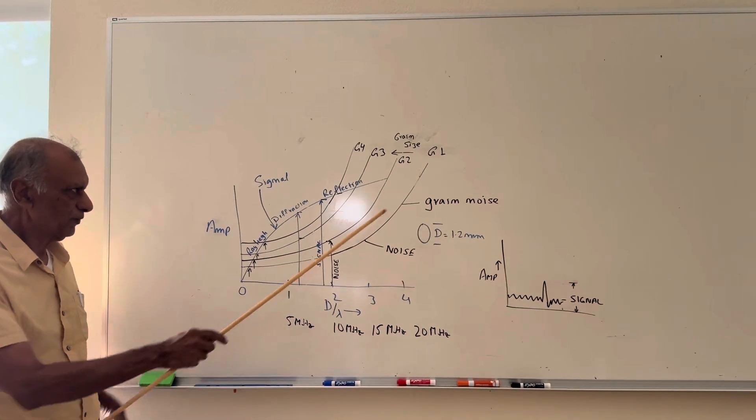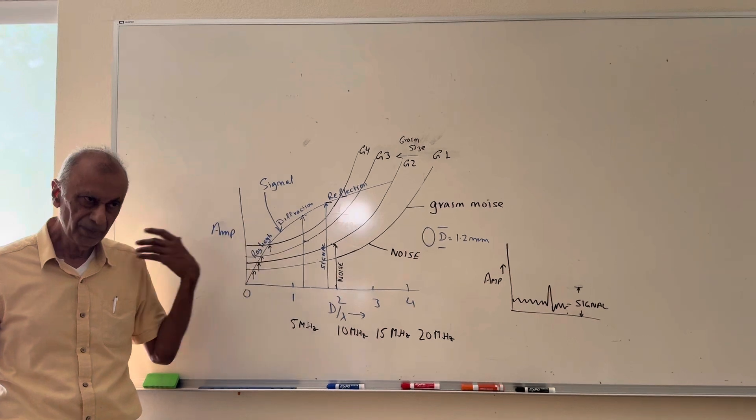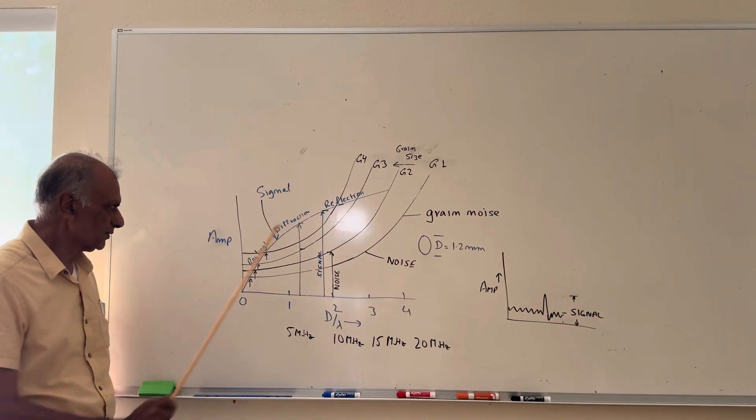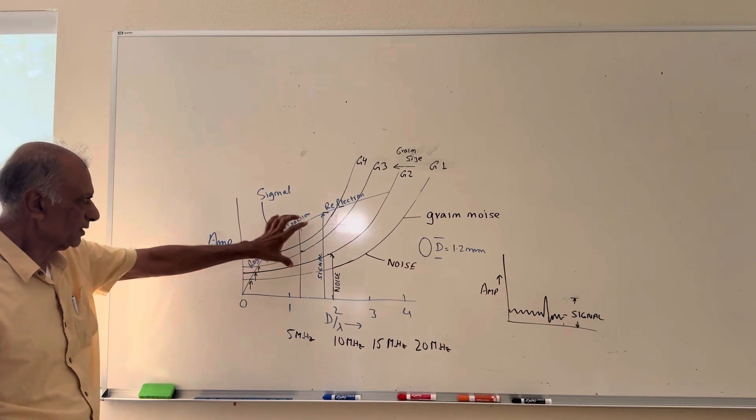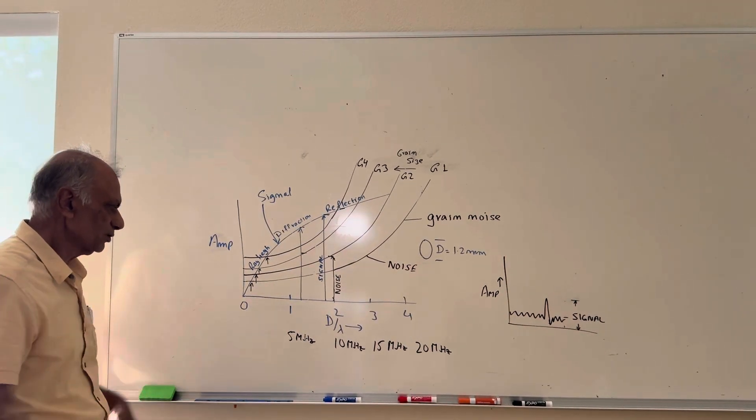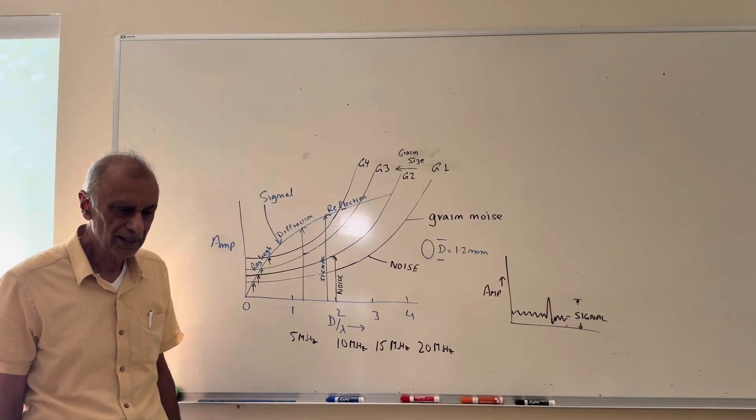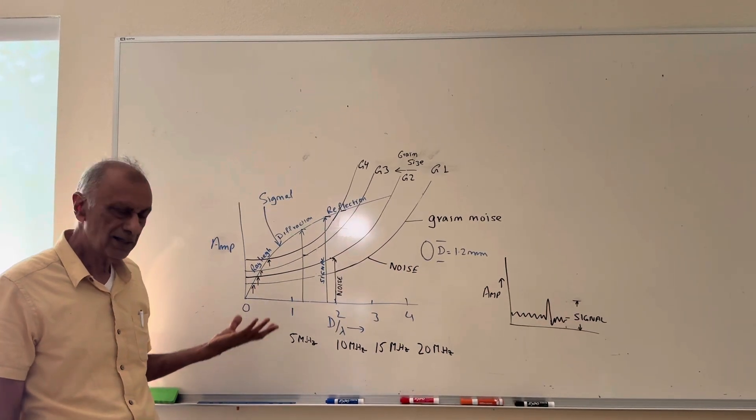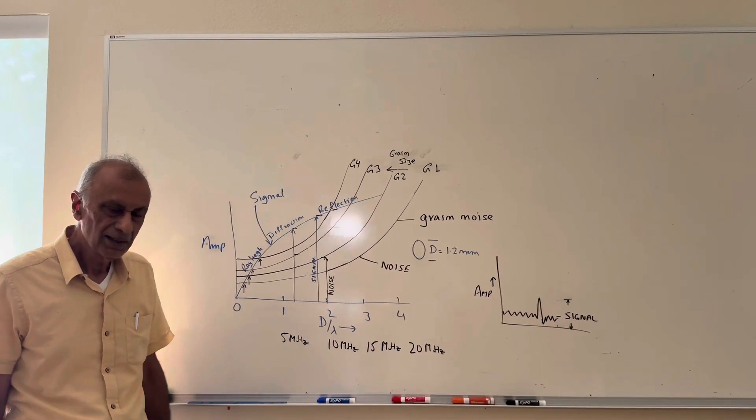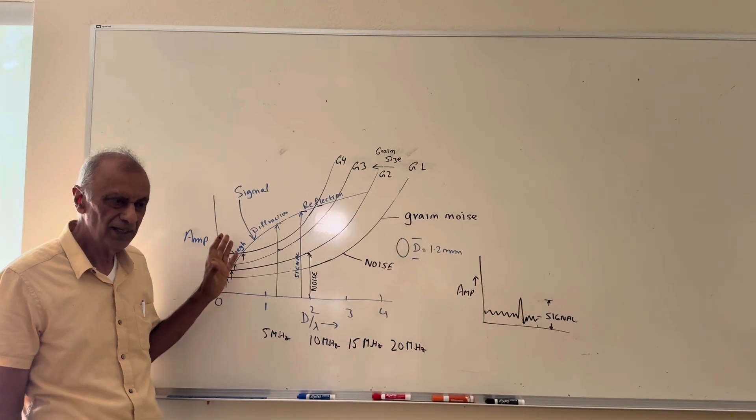So remember, it's not straightforward. Now if it was that simple, then we'd say, okay, the reflection keeps going up, so to look for the smallest size, we just keep reducing the wavelength, which means we'd go to 10 megahertz, 20 megahertz, 30 megahertz. But we all know that you can't go too high in frequency because you lose the flaw detection.